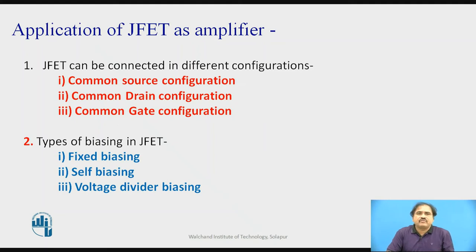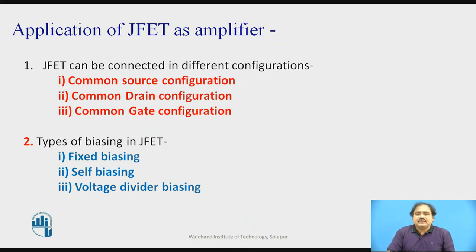The second application of JFET is as an amplifier. Since JFET has three terminals, it can be configured in three ways: common source, common drain, and common gate. Similarly to BJT, JFET amplifiers use biasing methods such as fixed bias, self-bias, and voltage divider biasing.